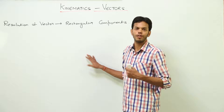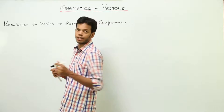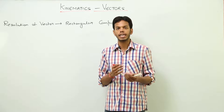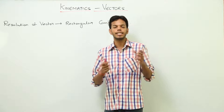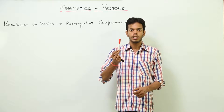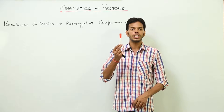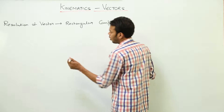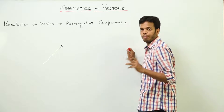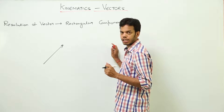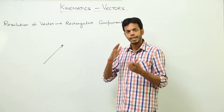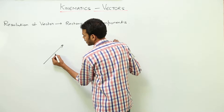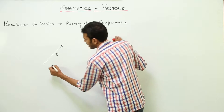What does resolution of a vector into rectangular components mean? About resultant, we have already discussed that resultant is the effective or net effect which a single vector produces. For example, if a pen is acted upon by two or three forces, the resultant vector would be a single equivalent force. Similarly, rectangular components of a vector would be two vectors in horizontal and vertical directions, such that the resultant of those rectangular components gives back the same vector. For example, suppose this vector is vector A.